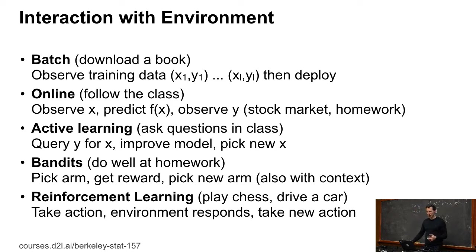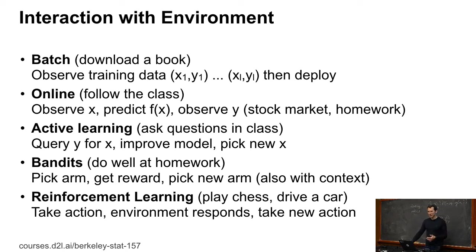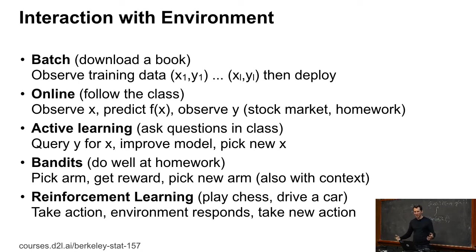There's also active learning. In this case, you can ask queries. There are different flavors where you can ask queries only for given images, or you can generate images and ask queries for those. The equivalent of that is if you ask questions in class. Quite unsurprisingly, if you do that, at least in machine learning, your algorithm converges significantly faster. And if you ask questions here, your mathematical model of what machine learning does will also converge much faster. So asking questions is good.